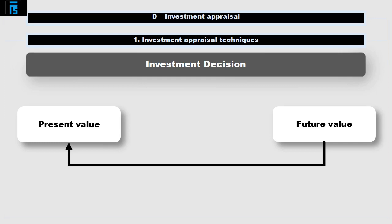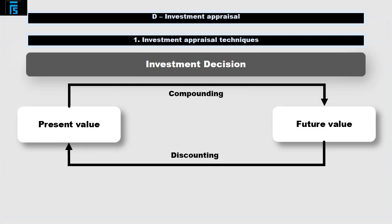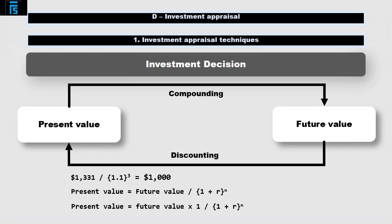Restating these future values to a present amount is known as discounting, and this is simply the opposite of compounding that we've already seen. For example, the present value of one thousand three hundred and thirty one dollars received in three years time at an interest rate of ten percent would be one thousand three hundred and thirty one dollars divided by 1.1 cubed, equals a thousand dollars. In general terms, the present value equals the future value divided by (1 + r) to the n, where r is the annual rate of interest and n is the number of years.